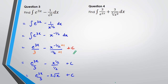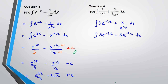Last question of the day. I need to move things around: e to the power of 2x brought to the numerator becomes e to the power of negative 2x, and on the other side I've got 3 over x to the power of 2 thirds, dx. I need to bring everything to the numerator before integrating, so I'll write this as 3x to the power of negative 2 thirds, dx.